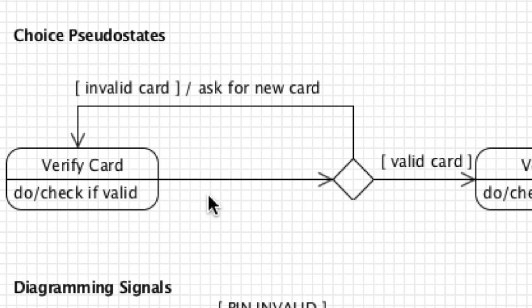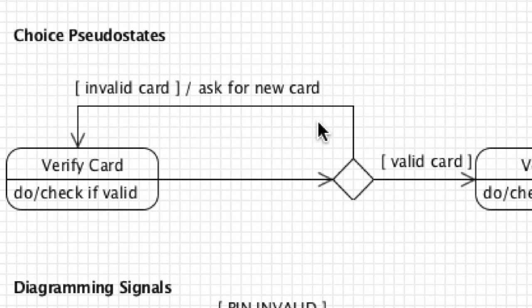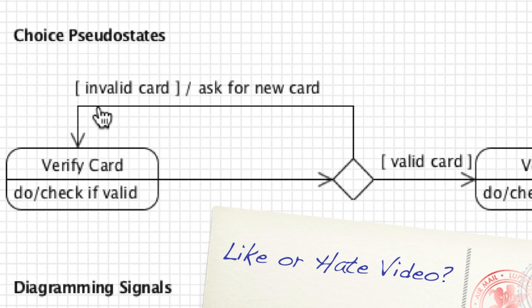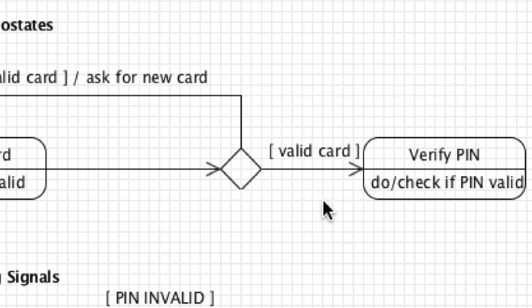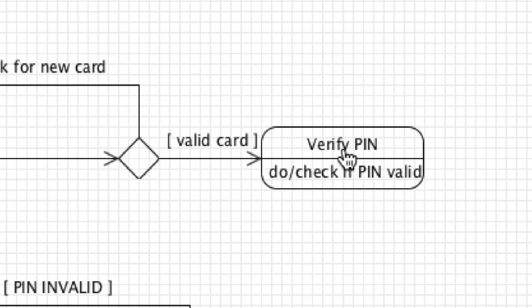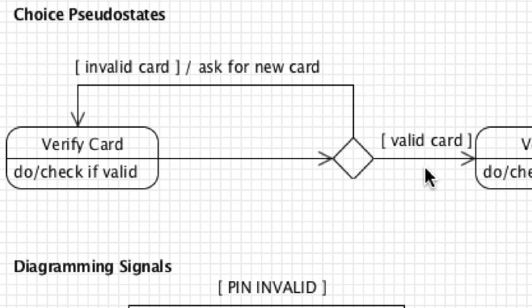Choice pseudo states are used whenever a Boolean condition determines which transition takes place. Here, verifying the card leads to a diamond that evaluates whether the card is valid: if not valid it sends the system back to ask for another card, and if valid it proceeds to verify the PIN.